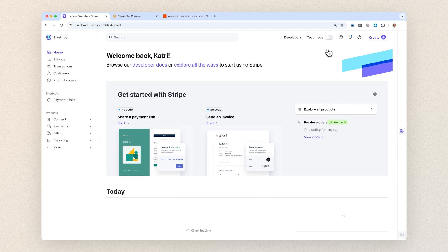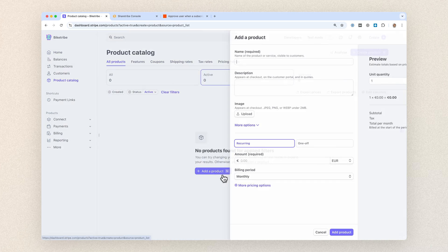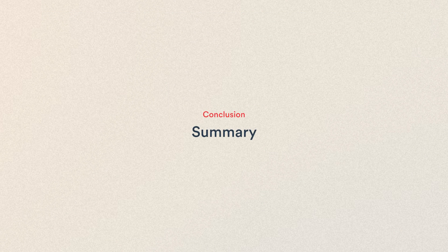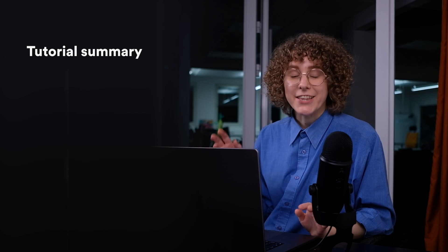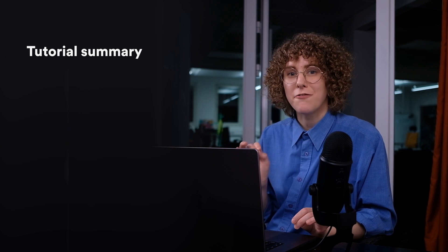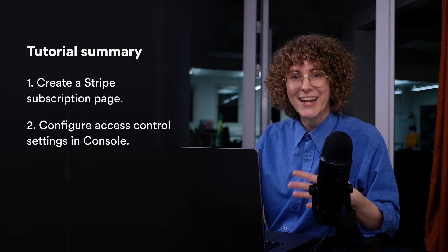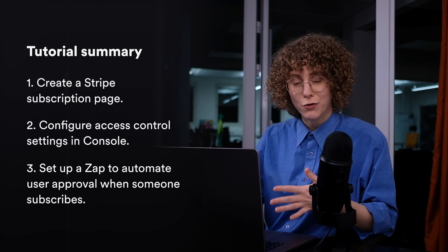As I mentioned in the beginning of the video, this setup happened in your test environment with test data. When you're ready to make your subscription flow live, follow the same steps as in this tutorial, but in your live marketplace and Stripe dashboard instead. So that's setting up automated membership subscriptions in your ShareTribe marketplace. In this tutorial, we went through the three key stages of setting up subscription payments: creating a Stripe subscription page, configuring access control settings, and setting up a Zap to automate user approval when someone subscribes. Your marketplace is now monetized through membership subscriptions. I hope this video helps you set up subscriptions in your marketplace, and best of luck with your business.